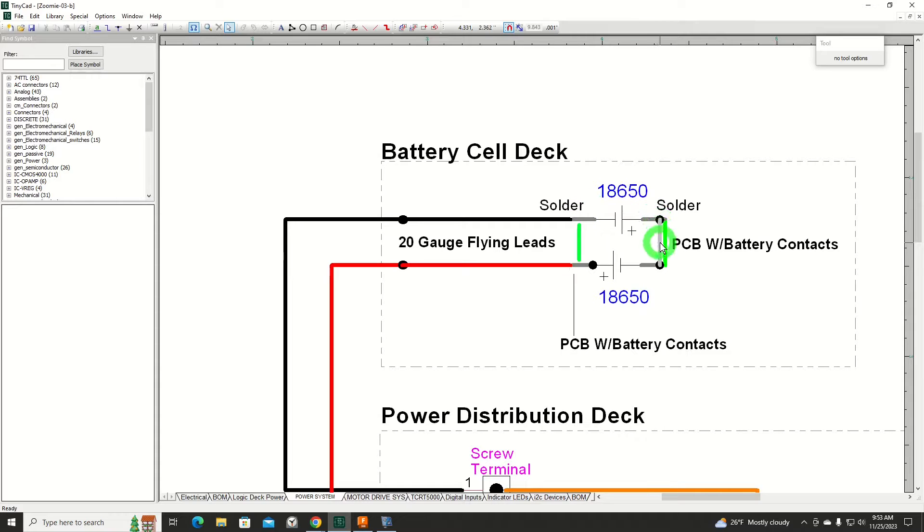We're going to have a PCB here with a couple of battery contacts, a PCB here also with a couple of battery contacts. And finally, we will have two flying leads. Don't know the exact length yet that we need, so we'll leave them a little bit long at this time.